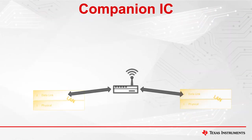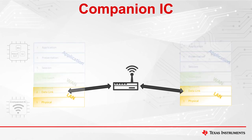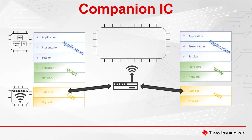A companion IC implements LAN protocols and is responsible for transferring data frames between two nodes in the local network. In Wi-Fi, the companion IC is responsible for controlling access to the air medium, building data frames, encrypting and decrypting data, and managing procedures like scanning, connecting, and roaming.